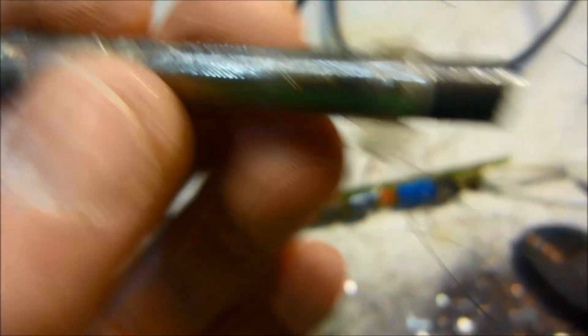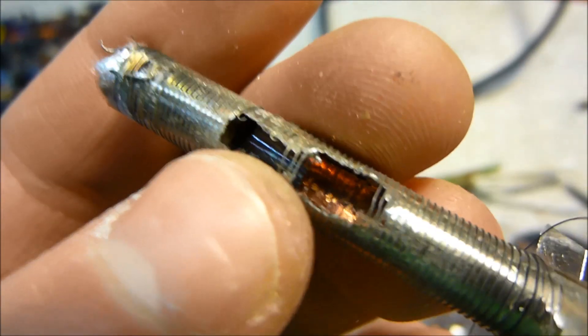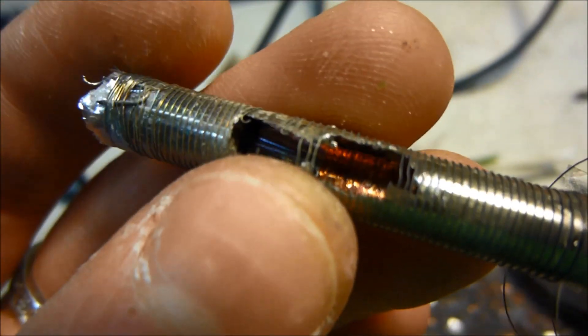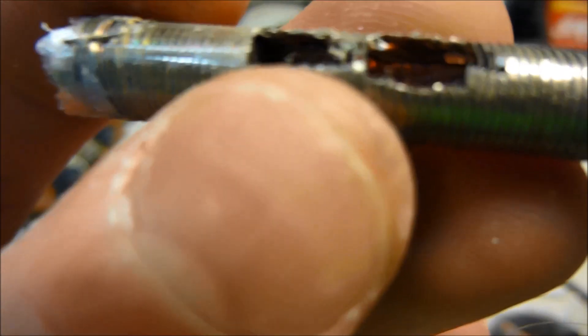And underneath all that heating wire, and then it started turning, and it pretty much twisted all the wires off and ruined everything. So, yeah, it pretty much chewed through all the heating elements there.